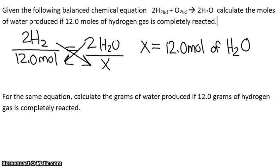So that question is pretty simple stoichiometry. The second one is a little more tough. We're going to use the same balanced equation, but this time it says, calculate the grams of water produced if 12.0 grams of hydrogen gas is completely reacted.